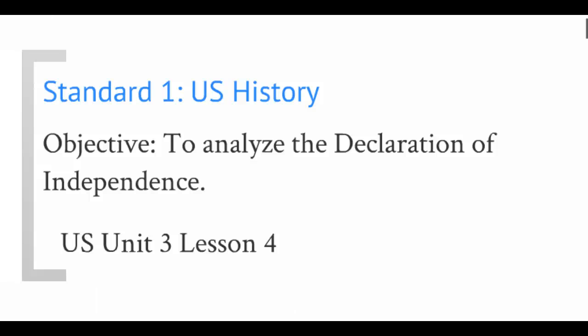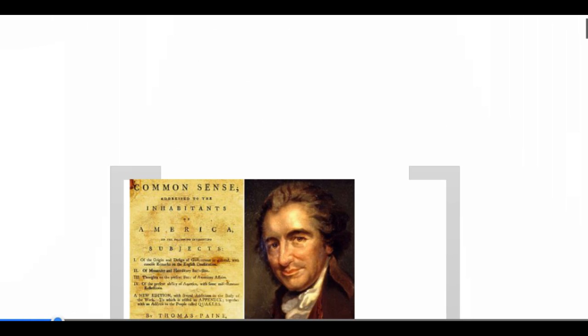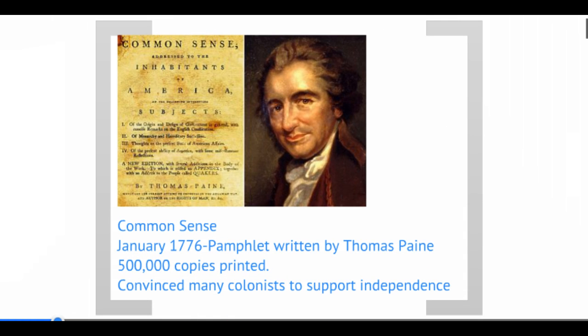In this lesson, we are going to take a look at the Declaration of Independence. Before we get there, we need to talk about the fact that the First Continental Congress, as we learned about in the last lesson, went home. In between 1774 and when the Second Continental Congress comes to meet in 1775, we have fighting that breaks out. The Battles of Lexington and Concord in 1775 are the first battles of the American Revolution.